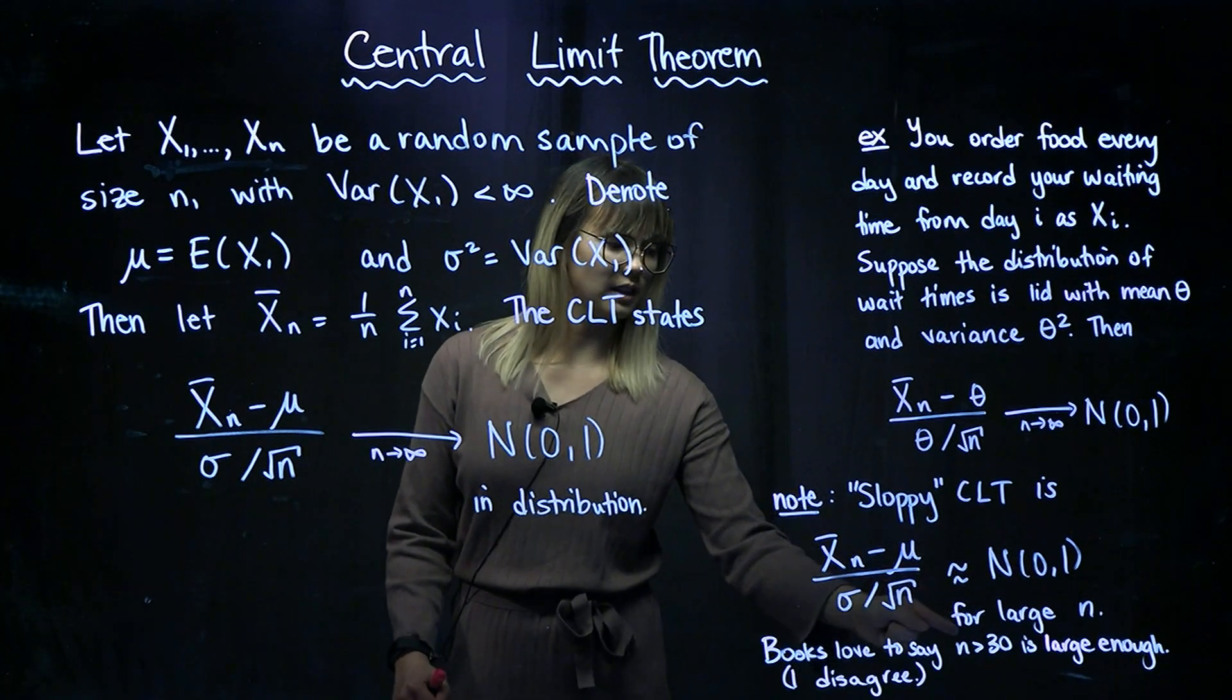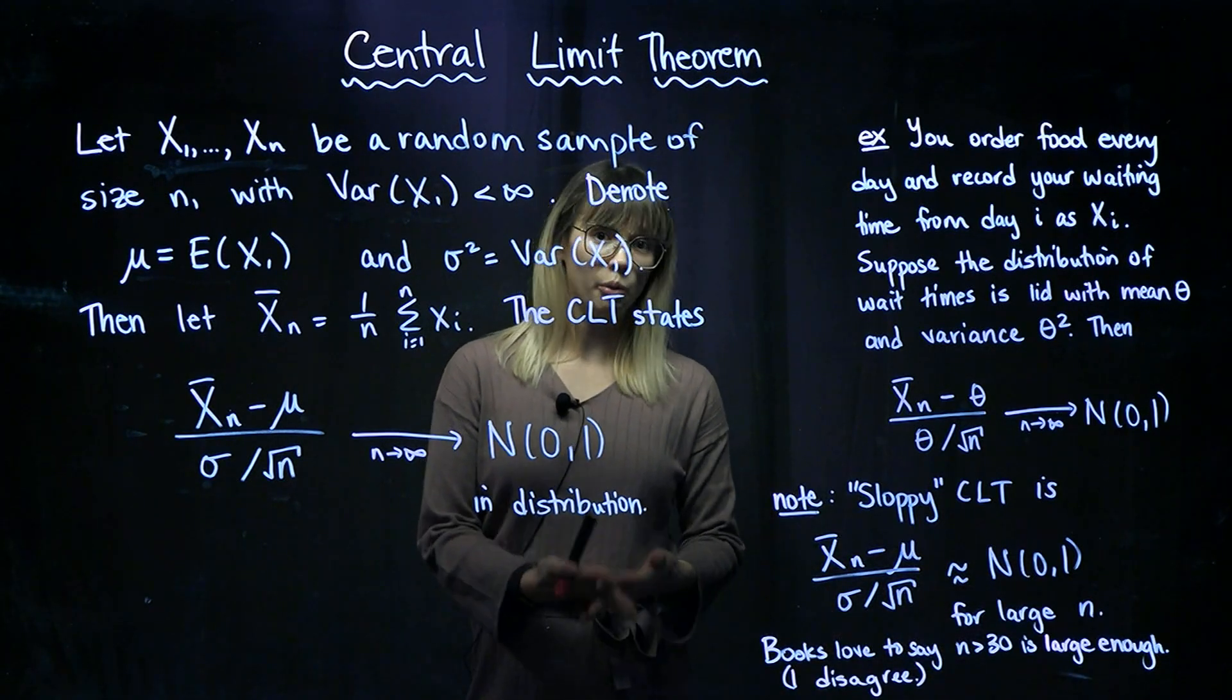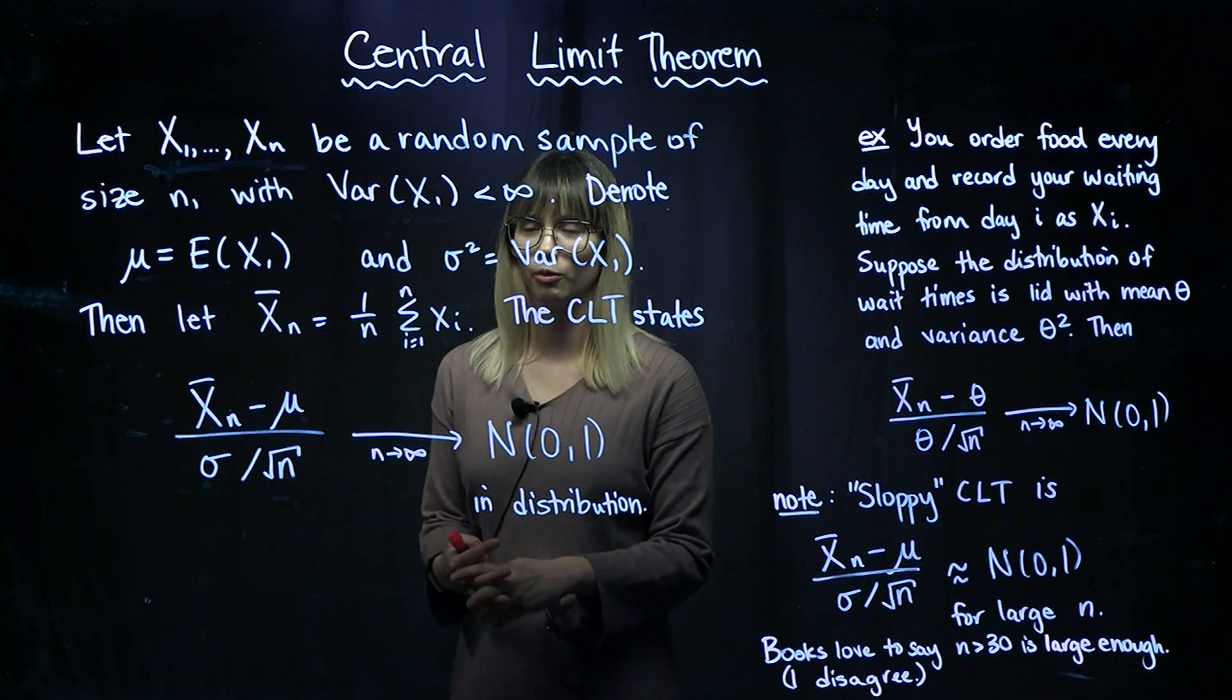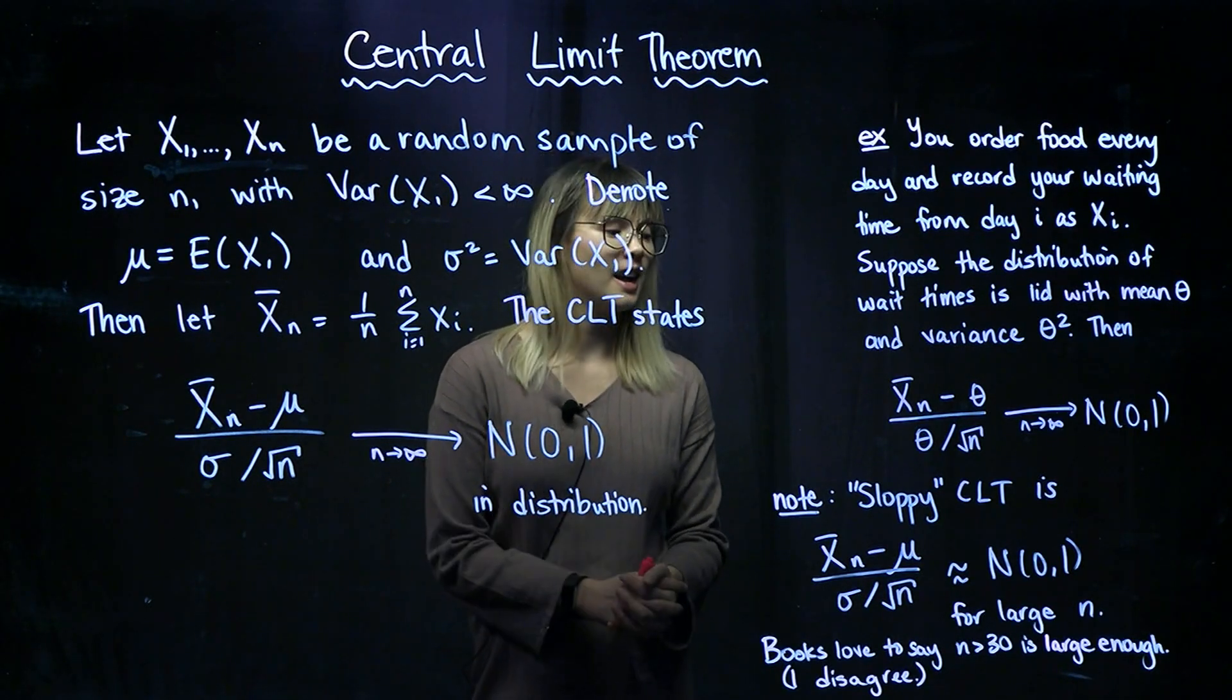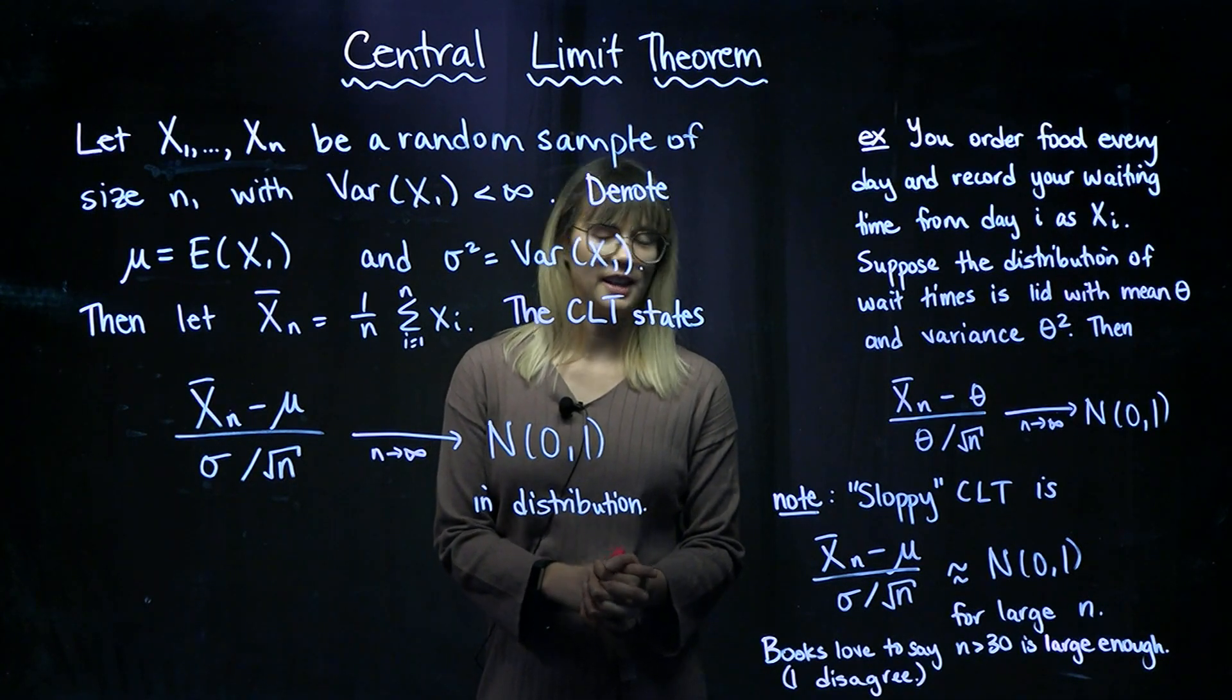Now as soon as you write that something is going to be true for a large enough n, then people love to ask, what's a large enough value of n? And of course, if you look at any textbook, well most textbooks love to say that n greater than 30 is large enough for this to hold. Now I definitely disagree.